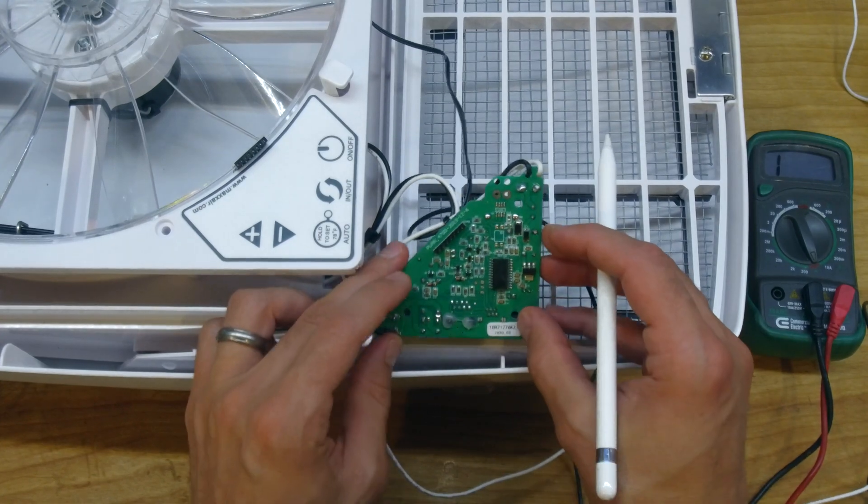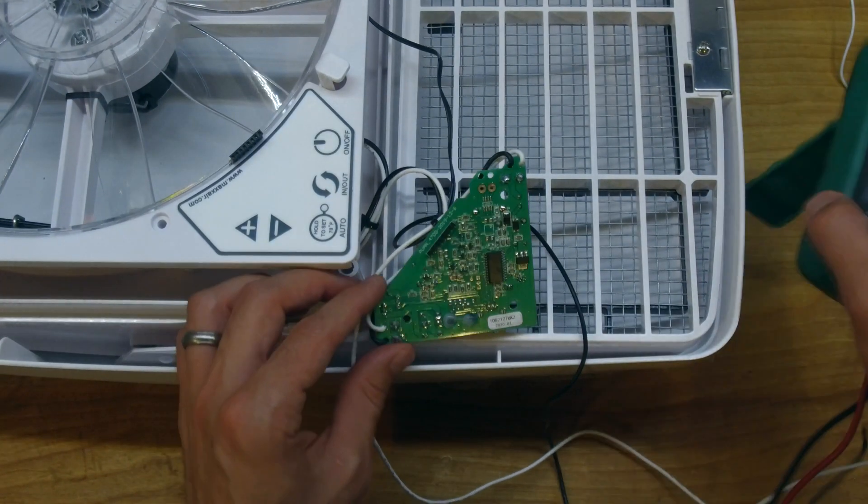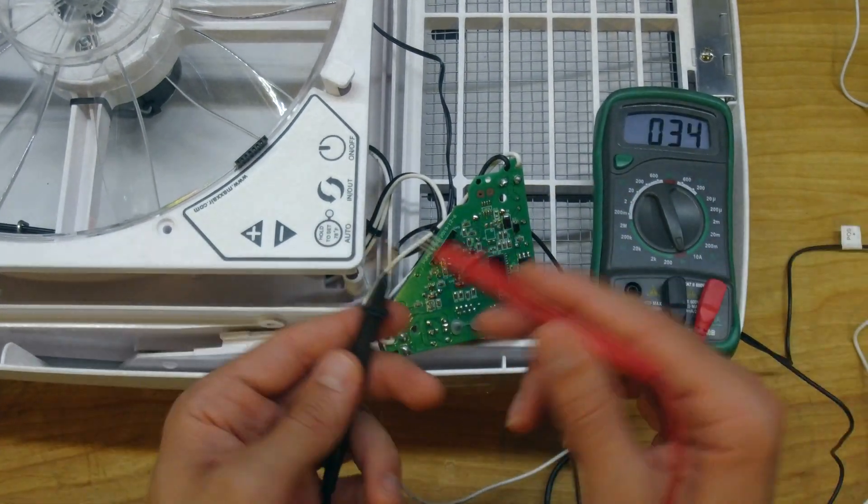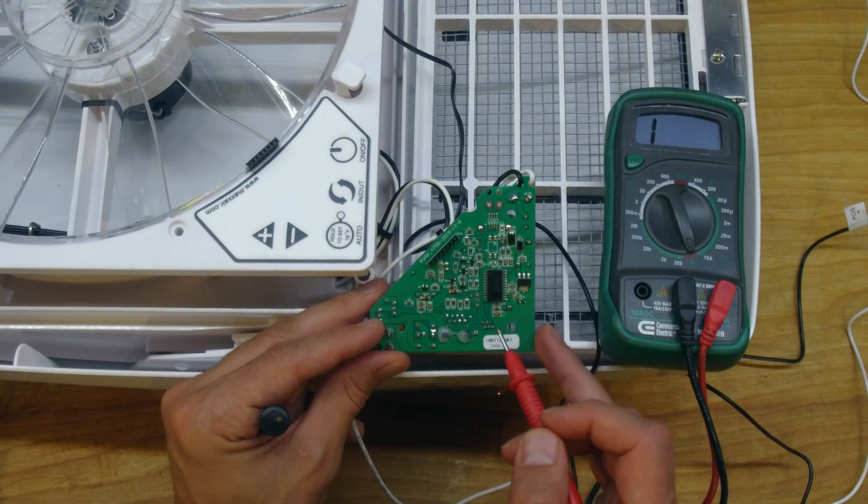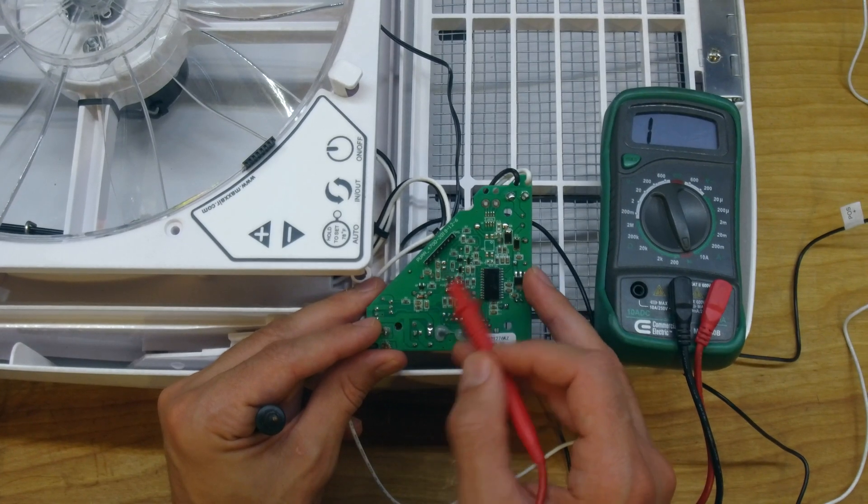So to verify that that's how things are connected, we can just take a multimeter here and we just make sure that we have continuity between all the pins and the contacts that we expect to, and we do.